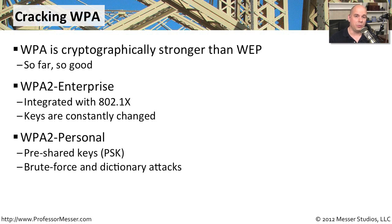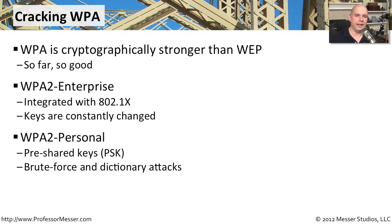They'll try words like Apple, home, address — anything in their dictionary hoping to hit on whatever the pre-shared key was. They could spend hours, in some cases even days, trying to figure out the pre-shared key. If you're setting up your wireless network, you want your pre-shared key to be something you can't find in a dictionary — not a word at all. You want it to be a random amount of data with a lot of entropy, as we call it in computing.